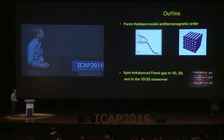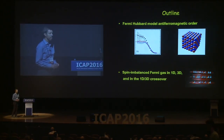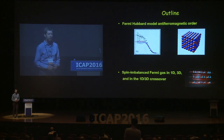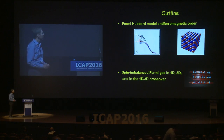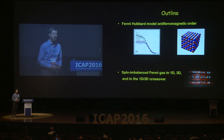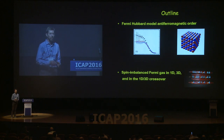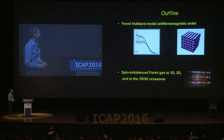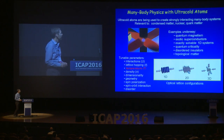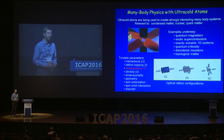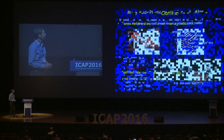Here's an outline of my talk. I'll first talk about the Fermi-Hubbard model and especially antiferromagnetism, which is predicted to occur in it. Then I'll talk about spin-imbalanced Fermi gases both in 1D and 3D, and most recently we've looked at the crossover from one dimension to three dimensions. The first topic pertains to quantum magnetism and the second is relevant to exotic superconductivity.